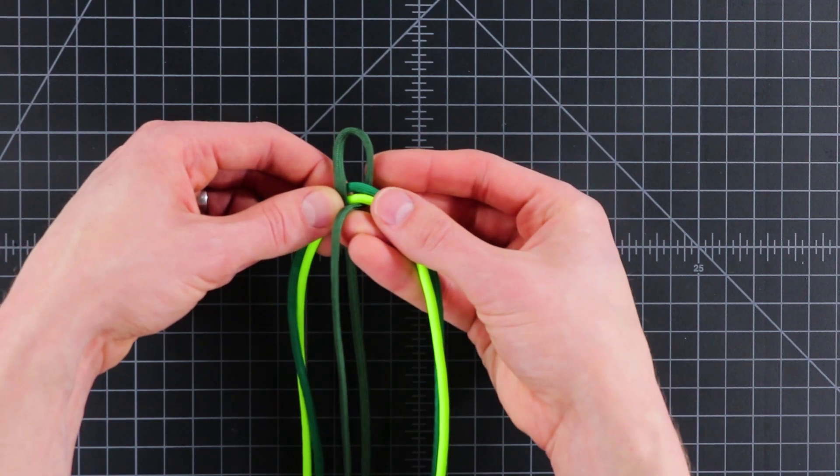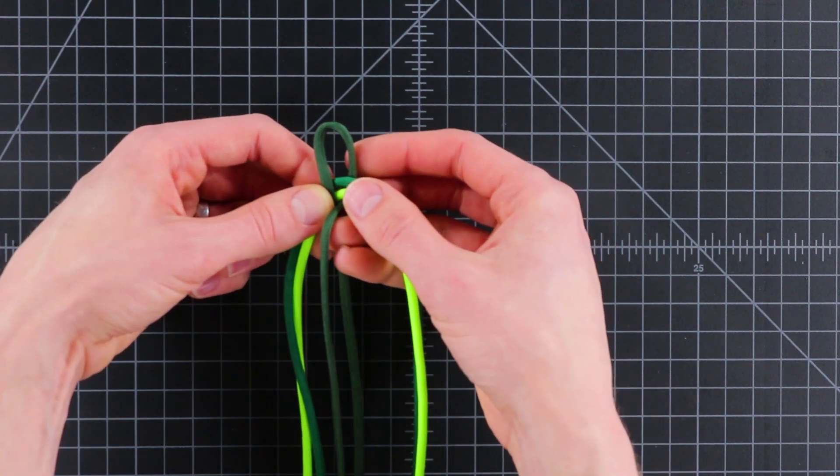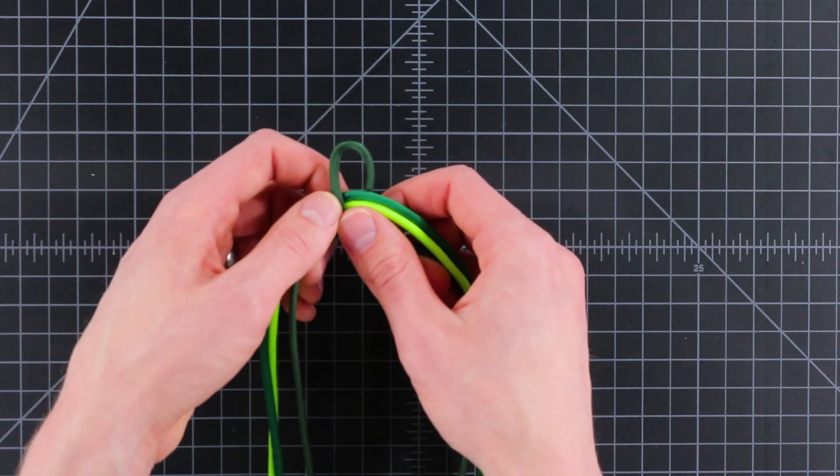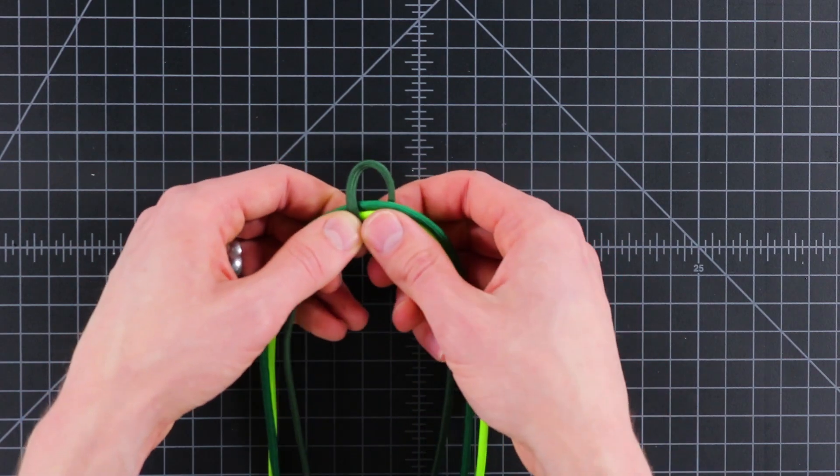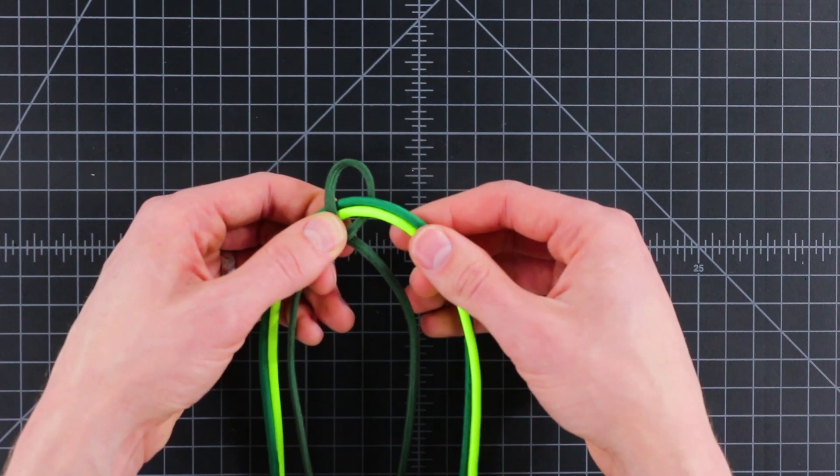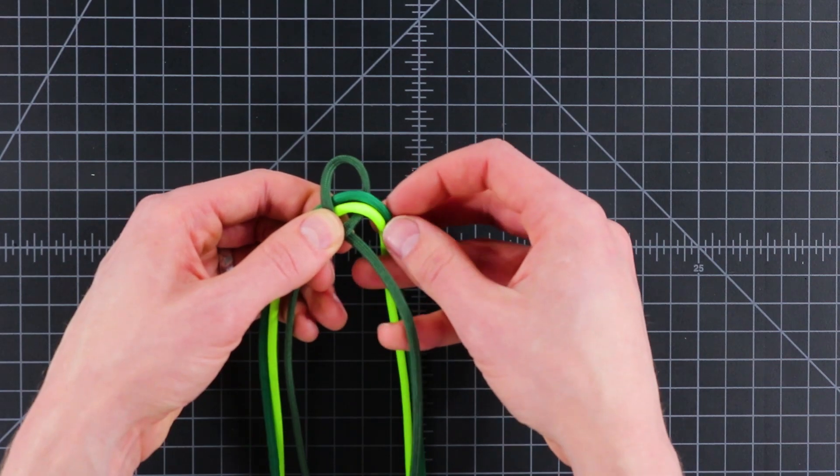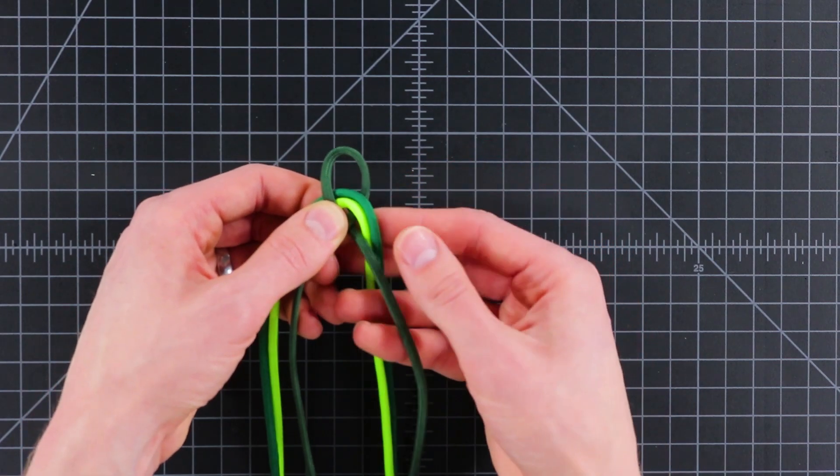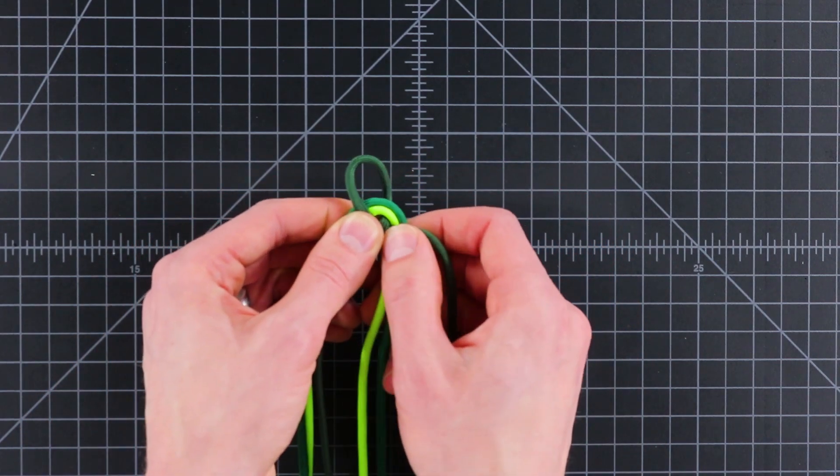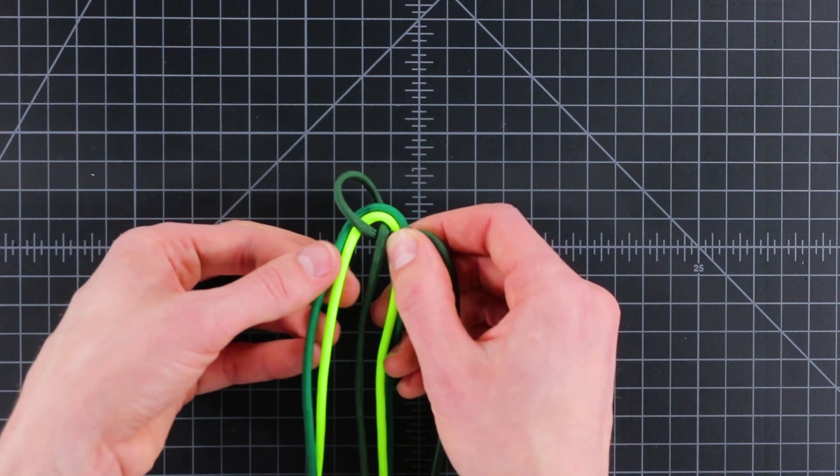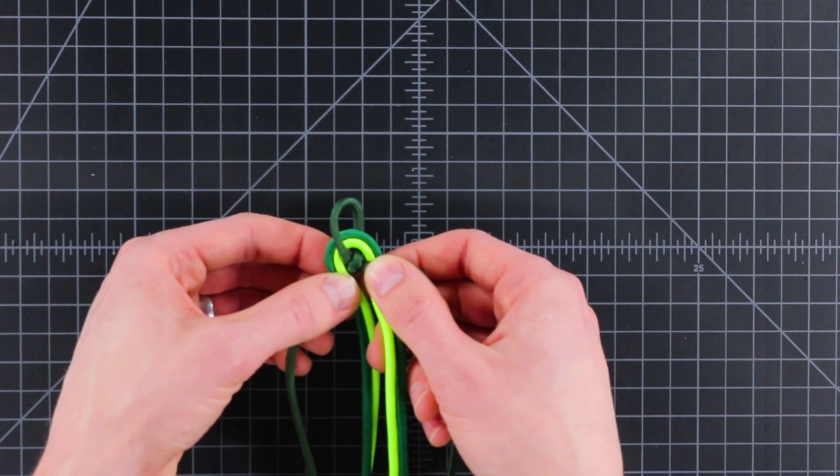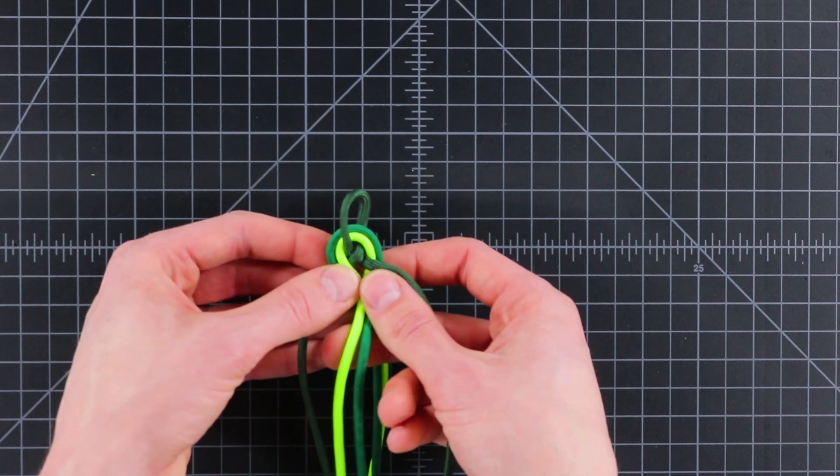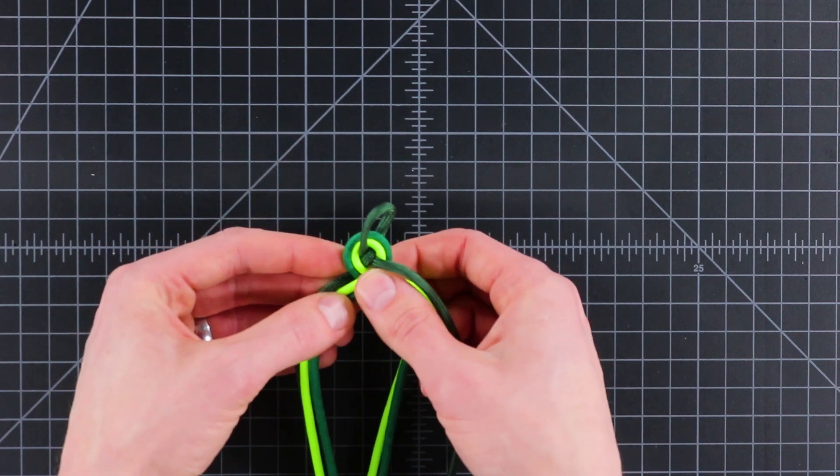and we're going to cross the right single cord over the left single cord. And then right after that we'll be passing the double cords across each other. So this goes underneath the right single cord, and then this one goes over top the left single cord, and then across each other with the right side on top.